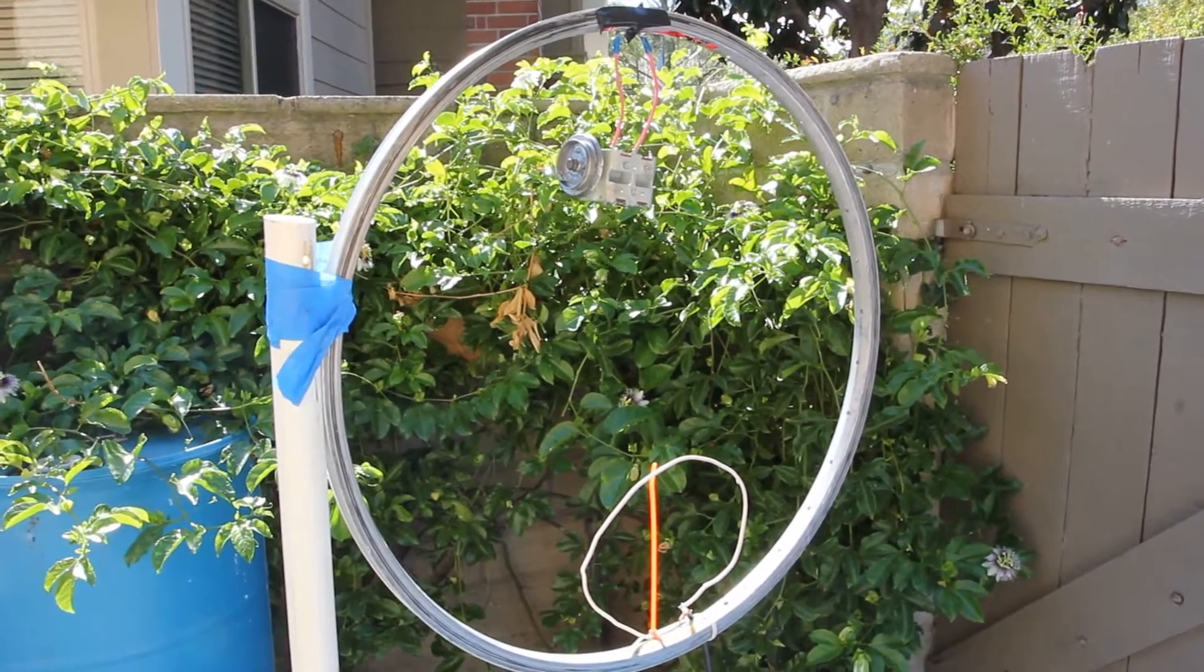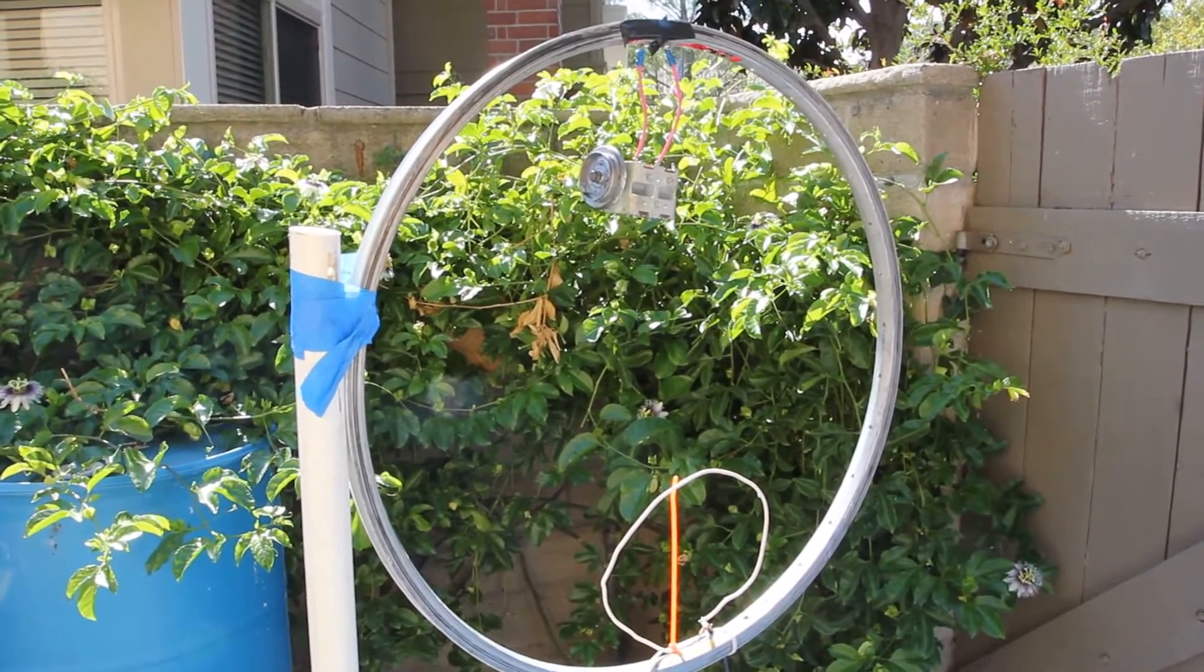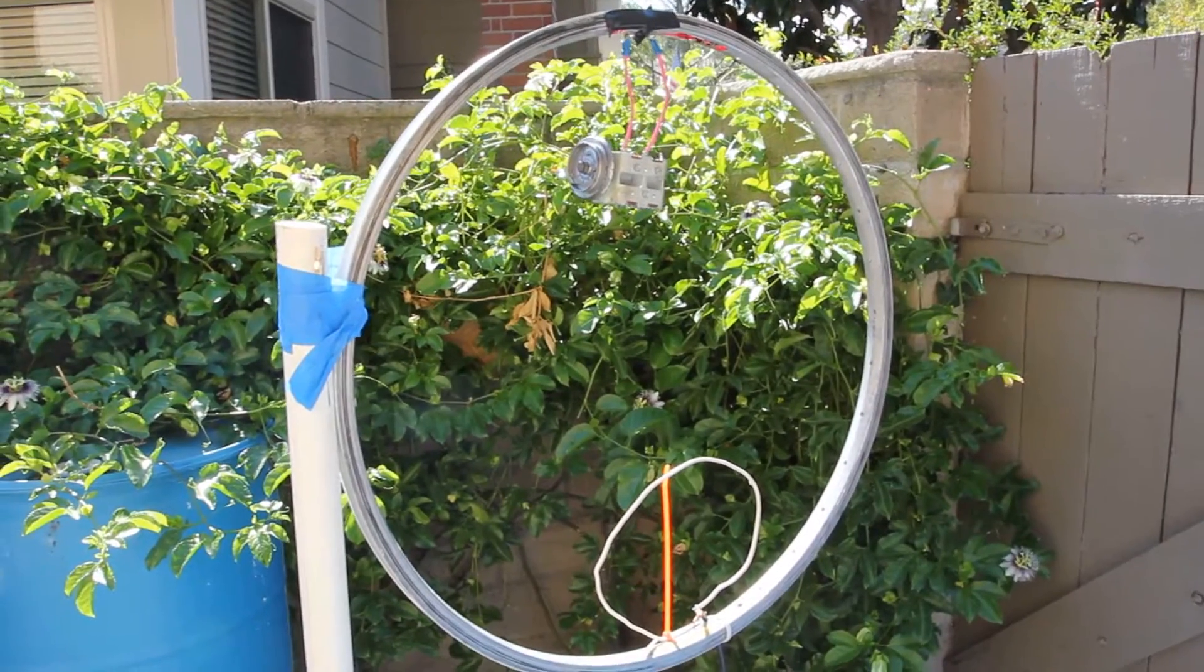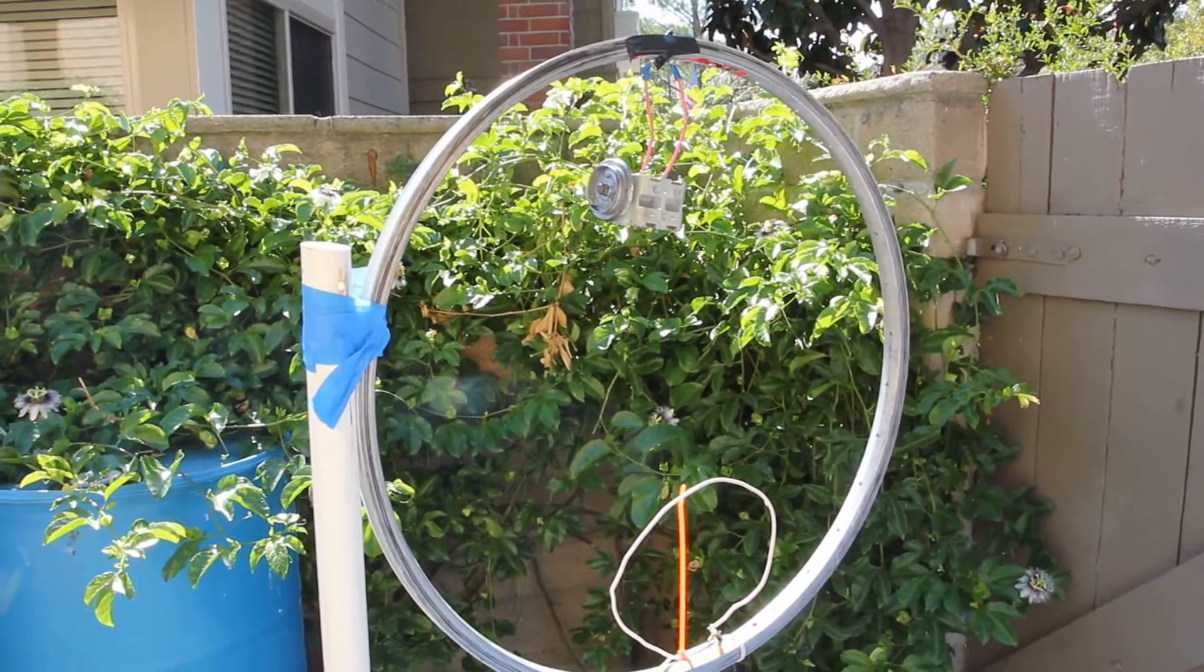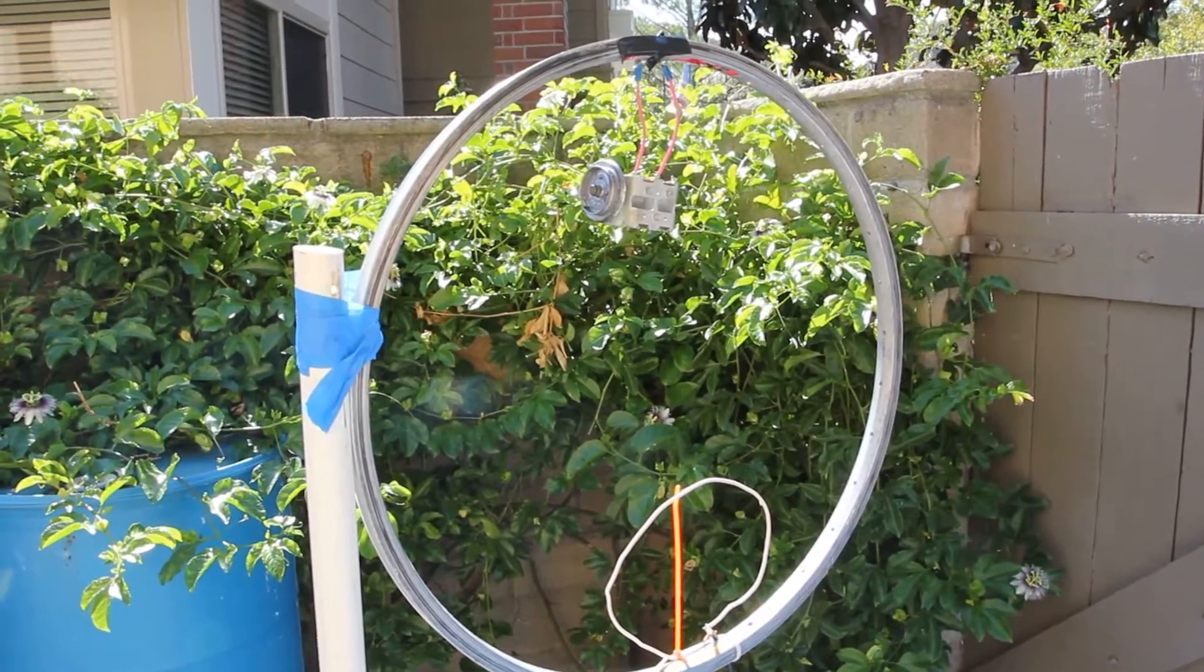This is KK6 Fox Trout Uniform Tango with another radio experiment. This is a magnetic loop antenna made out of a bicycle wheel frame which I found on the side of the road. Just thought it'd be fun to put together.